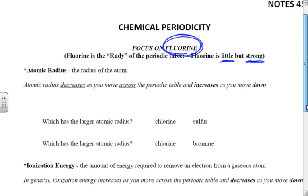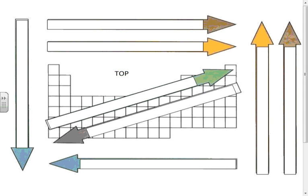Radius is going to be the distance from the center of a circle out to the edge. So in an atom, it's going to be from the center of the nucleus out to the edge of the electron cloud. If we think about what's happening as we go left to right on our periodic table, we might think that as we go from one element to the next, the elements would be getting larger because you get a new proton and a new electron each time you move across.